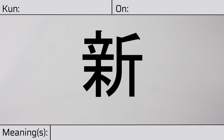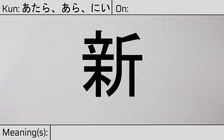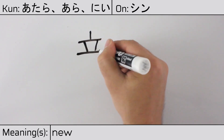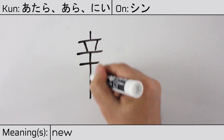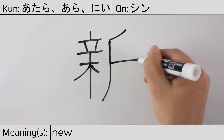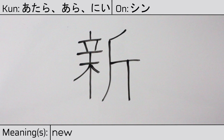Welcome to this lesson on Japanese kanji. Today, we'll be discussing this character. This kanji has kunyomi or Japanese readings of atara, ara, or ni, and it has an onyomi or Chinese reading of shin. This character has the meaning new. Here is the stroke order.